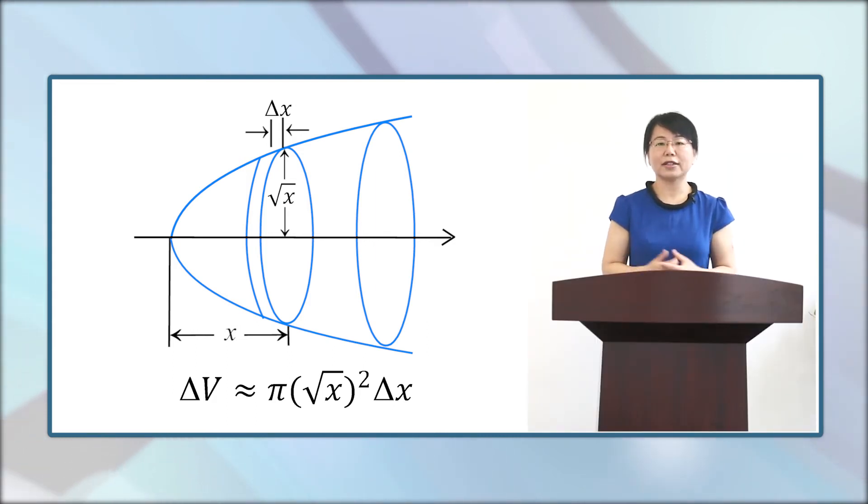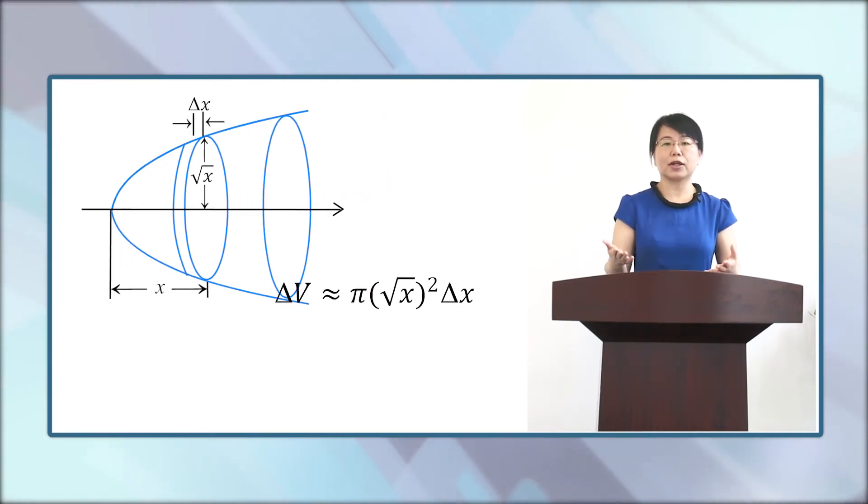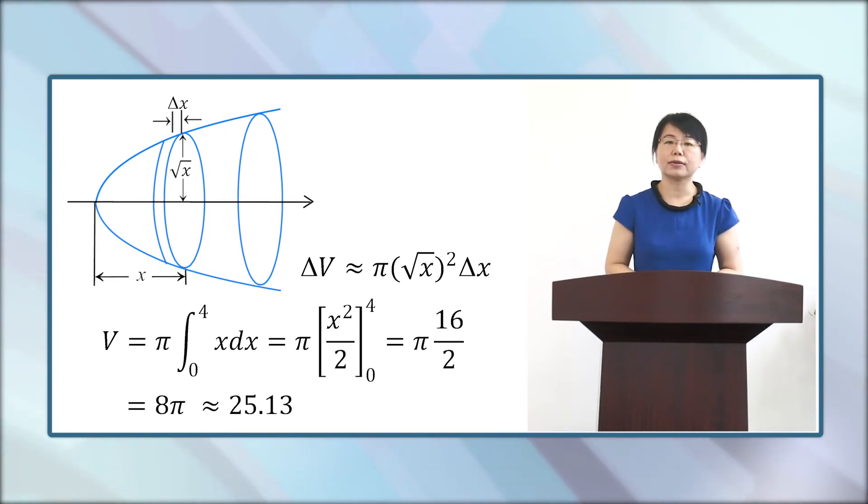Okay, thank you so much. It's very good. Now let's see the definite integral. Just now we found it's π times the definite integral, and this integral is easy to find because the antiderivative is x² over 2. Then we plug in the limits, we will find the total volume.